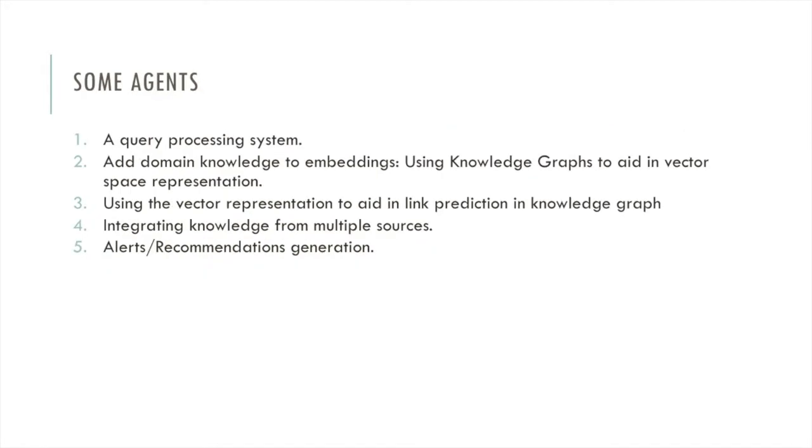Some agents which can be developed over the VKG structure are query processing systems, an agent which adds domain knowledge to embeddings using the knowledge graphs, an agent which uses the vector representation to do link prediction in a knowledge graph, and some others.